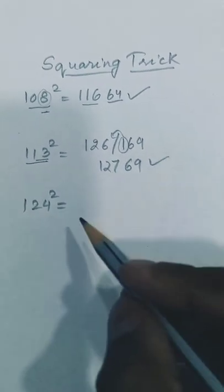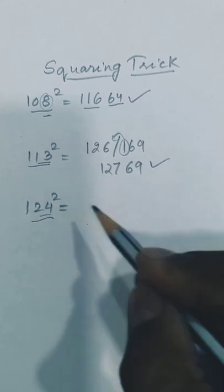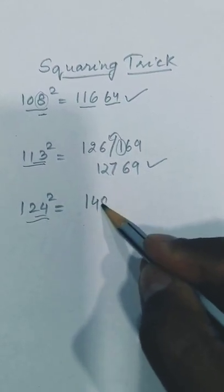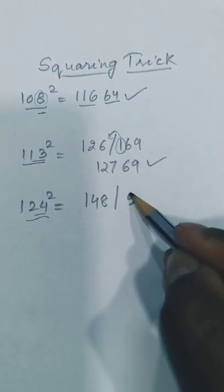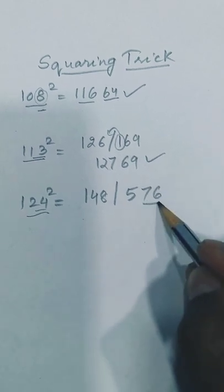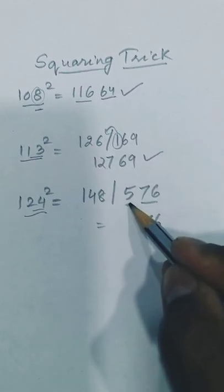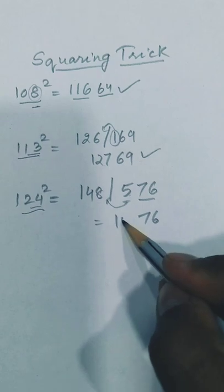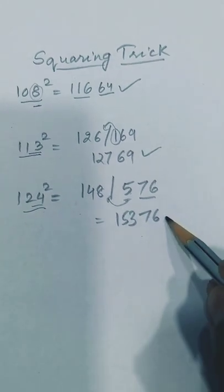Isn't that amazing? Let's see 124 square. 124 plus 24 is 148 and 24 square is 576. Retain two digits and carry forward the 5. 148 plus 5 is 153. So the answer is 15376.